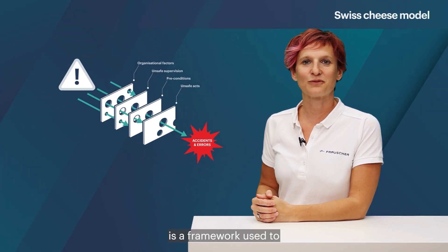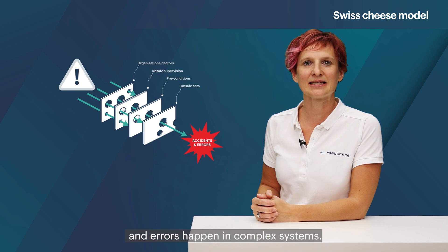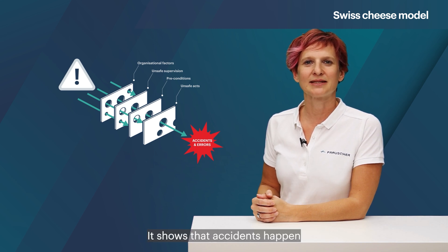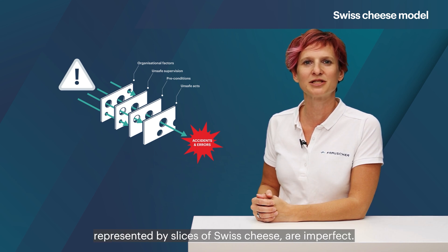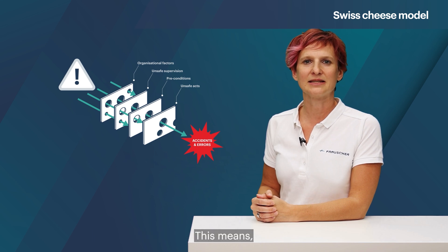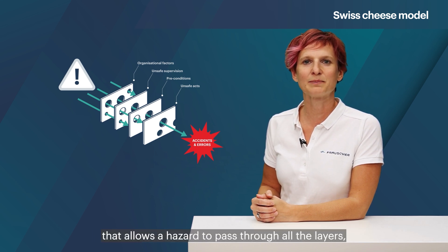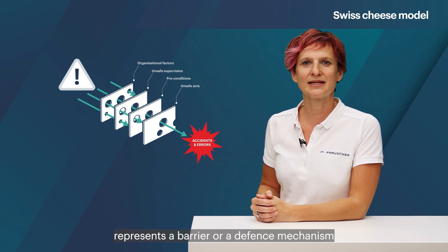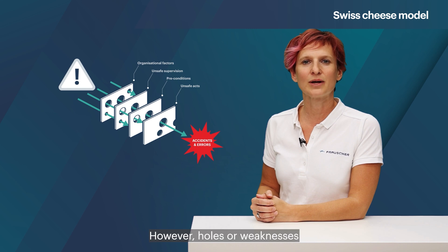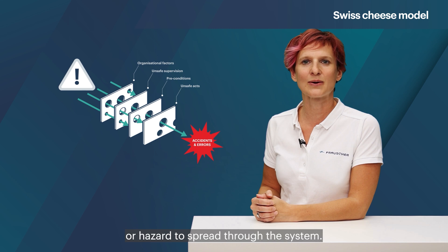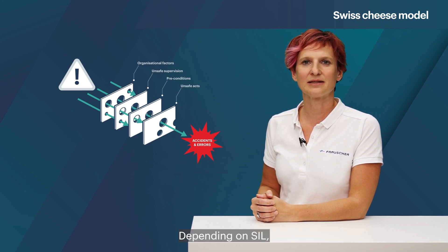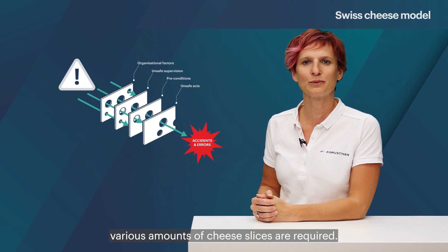The Swiss cheese model is a framework used to understand how accidents and errors happen in complex systems. It shows that accidents happen when multiple layers of defenses, represented by slices of Swiss cheese, are imperfect. This means they can align in a way that allows a hazard to pass through all the layers, leading to an adverse event. Each layer represents a barrier or a defense mechanism intended to prevent the accident from happening. However, holes or weaknesses in these layers can align, allowing errors or hazards to spread through the system. Depending on SIL, various amounts of cheese slices are required.